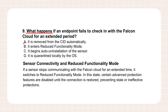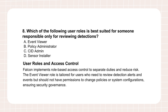One last area the questions touched on: access control within the Falcon console itself. Question eight asks about the best role for someone whose only job is reviewing detections. The source suggests answer A: the event viewer role. The explanation confirms it's for viewing detections without permissions to change policies or configurations. This boils down to the principle of least privilege and separation of duties — you only want to give people the minimum permissions they need. Someone who just needs to look at alerts shouldn't have the power to accidentally disable prevention policies for the entire organization, delete sensor data, or change user roles. The event viewer role limits their potential impact purely to observation, reducing risk of accidental misconfiguration and limiting what an attacker could do if that user's account were ever compromised.